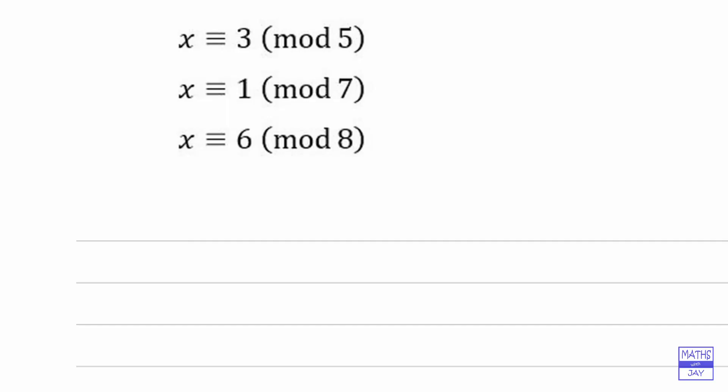The Chinese Remainder Theorem only works in this case because each pair of moduli are relatively prime — that means there are no common factors between them. For example, if we look at 5 and 7, they don't have a common factor; their highest common factor is 1. I think the best way to start would be to look at the general case first and then see how it works in this particular example.